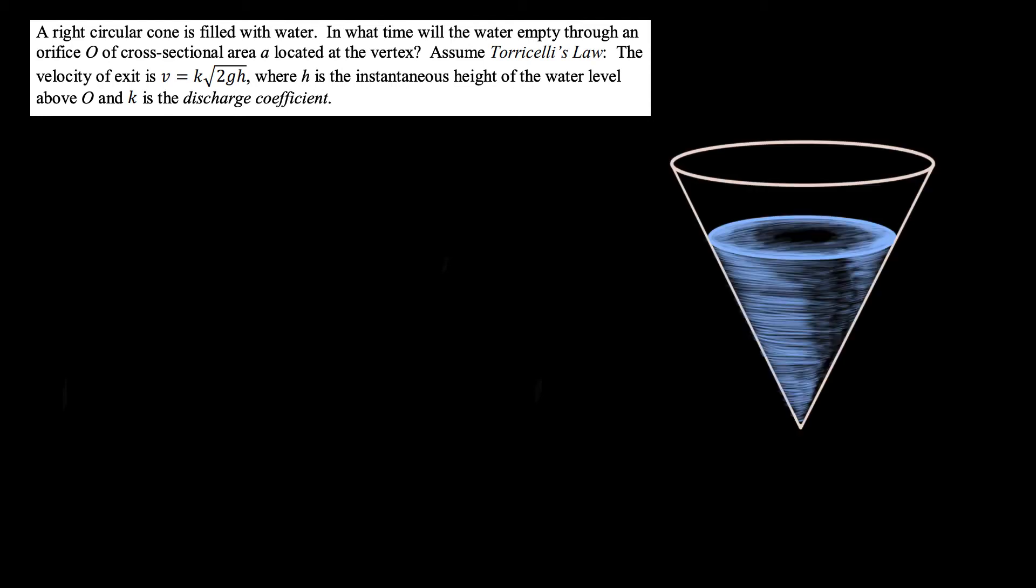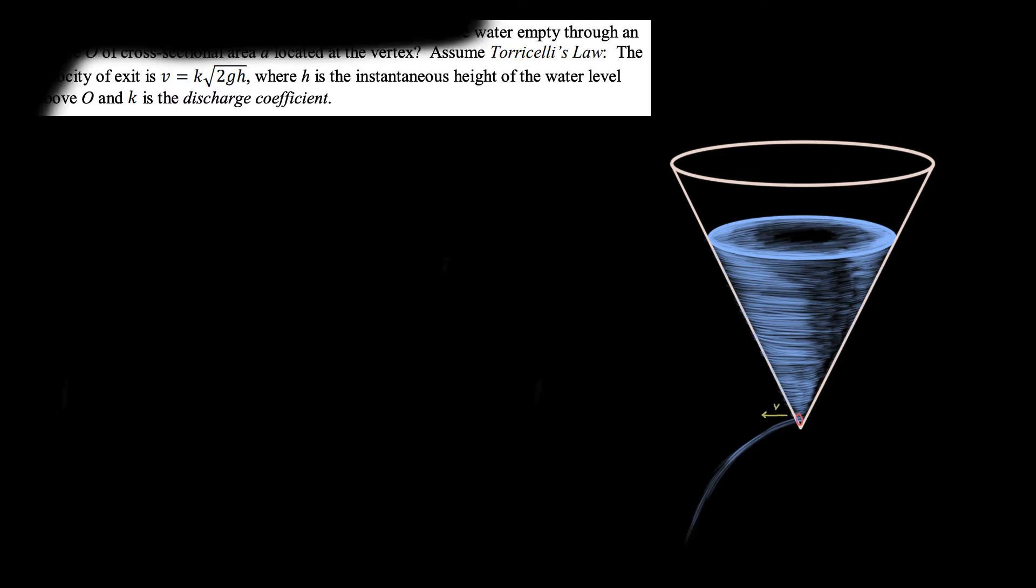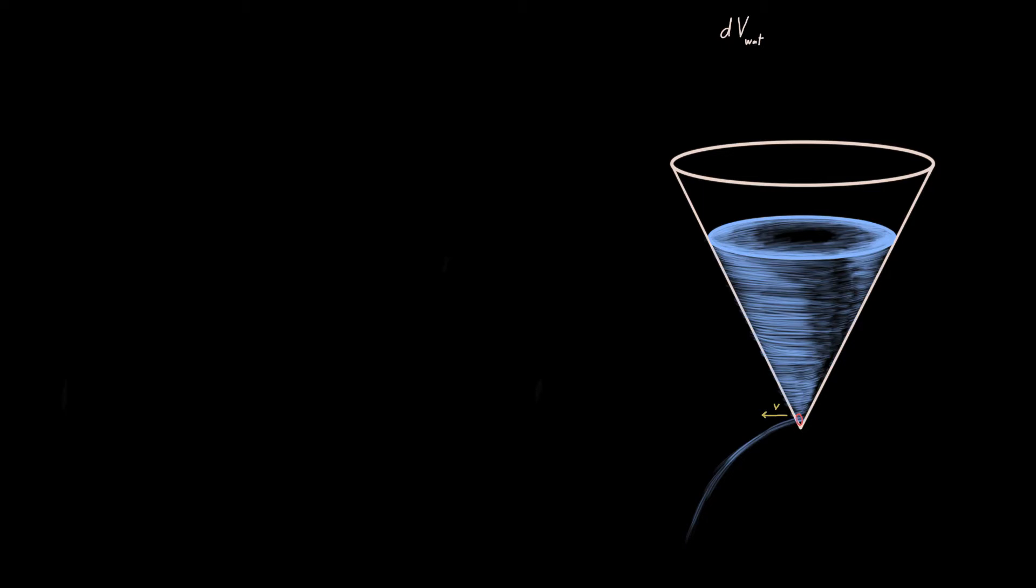Hey everyone, suppose we have a conically shaped tank filled with water initially, but we make a small cut at the vertex of cross-sectional area A and our water starts draining. Assuming Torricelli's law that the velocity of water exit is k times the square root of 2gh, where h is the instantaneous height of the water at any point in time, how long will it take for the tank to empty?